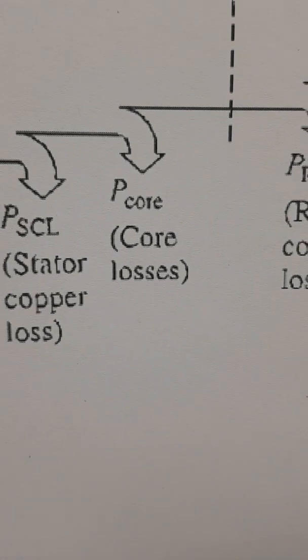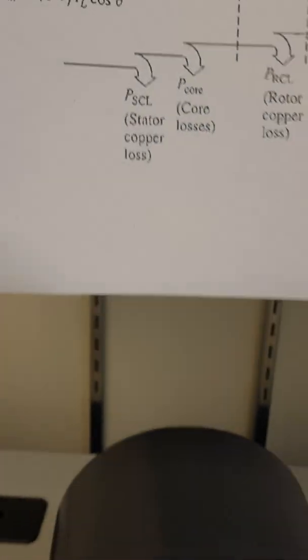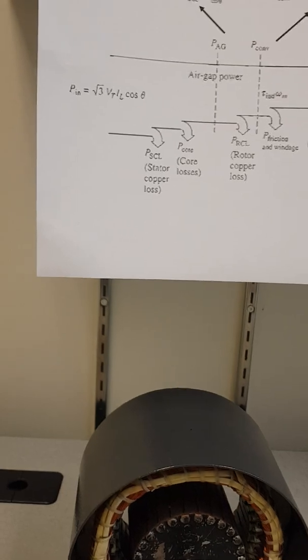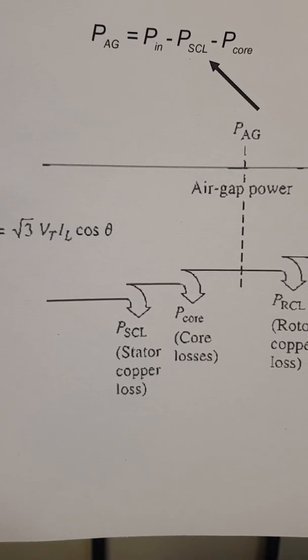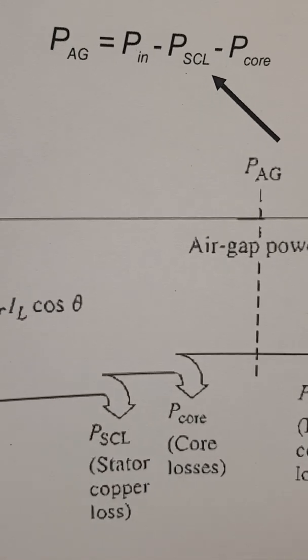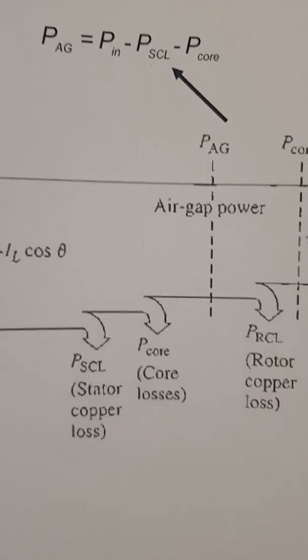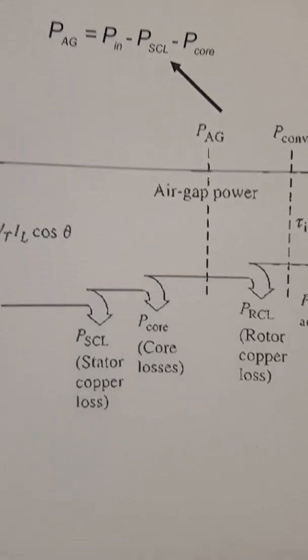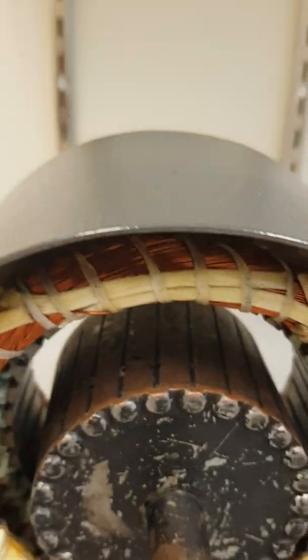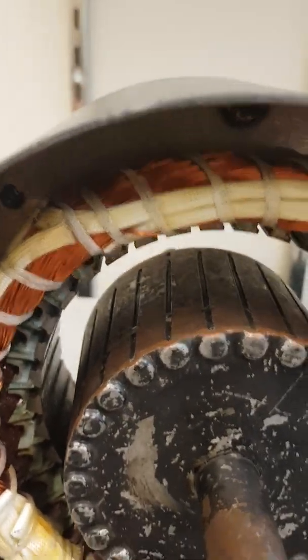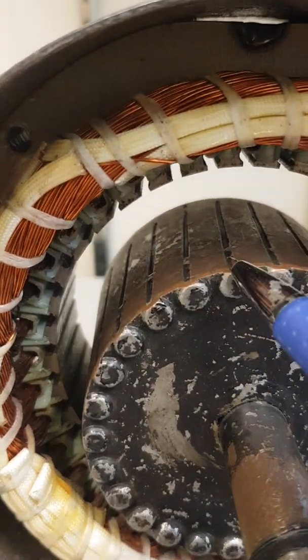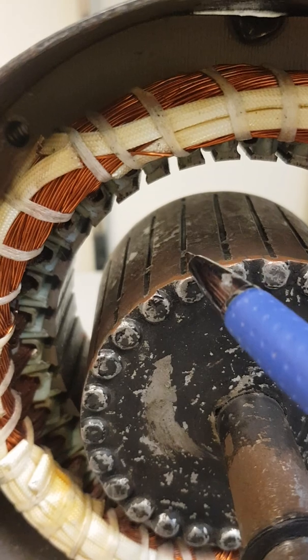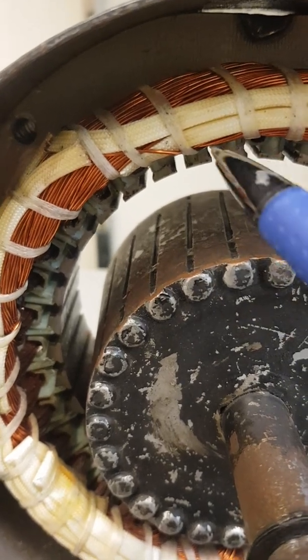Now we have P_in, and when we subtract from that the core loss and the stator copper loss, we have what we call the air gap power. What is the meaning of air gap power? It's the power that is actually now moving from the stator to the rotor through the air gap. This amount of power, subtracted from the losses, will reach the rotor.